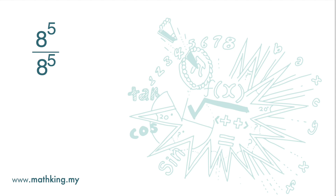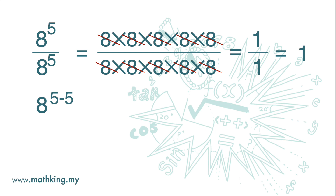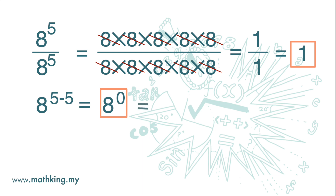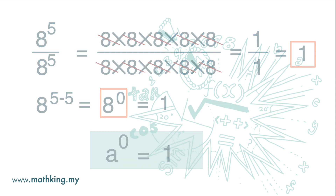Now, 8 to the power of 5 divided by 8 to the power of 5 — it can be written as 8 times 8, five times over. All the 8s cancel out and we get 1 over 1, which is 1. In index notation it is 8 to the power of 5 minus 5, which gives 8 to the power of 0. This means 8 to the power of 0 equals 1, and in fact any number to the power of 0 is 1.